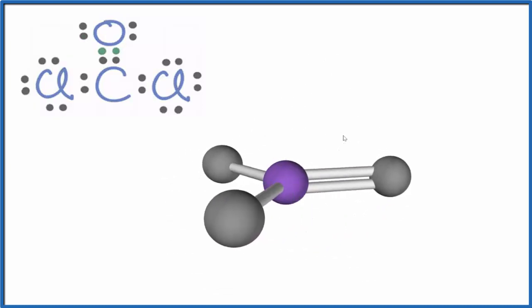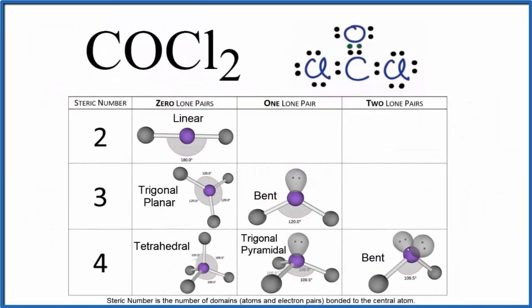Let's go back to our Lewis structure. We saw that we had a trigonal planar molecular geometry. Using the AXE notation, we could also figure out the molecular geometry.